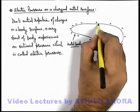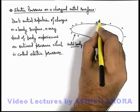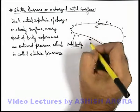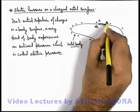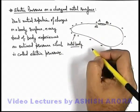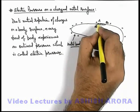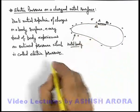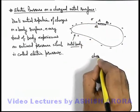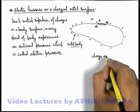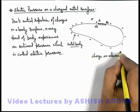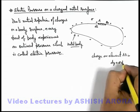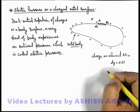Let us consider a small segment, say segment A-B, which is of area dS on the surface of this body. If the charge density at the location of this segment is sigma, then we can simply say the charge on element A-B is dQ, which can be written as sigma times dS.